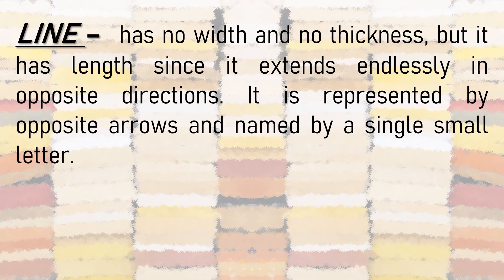Let us recall what a line is. From our previous video, we discussed point, line, and plane. By definition, a line has no width and no thickness, but it has length since it extends endlessly in opposite directions. It is represented by opposite arrows and named by a single small letter. For example, we can name this as line N.